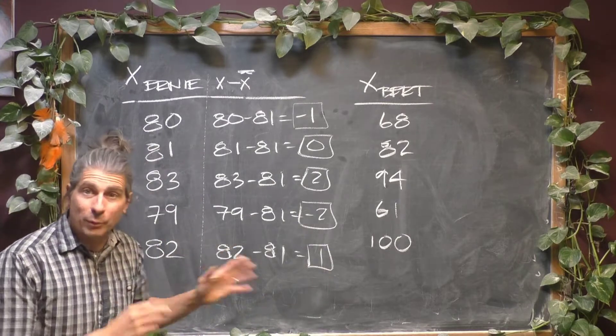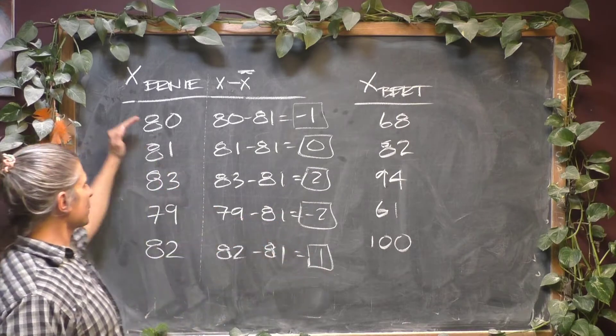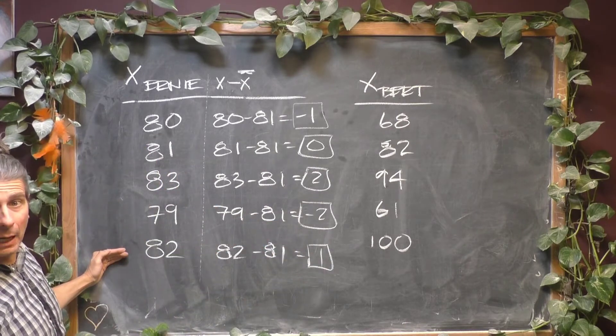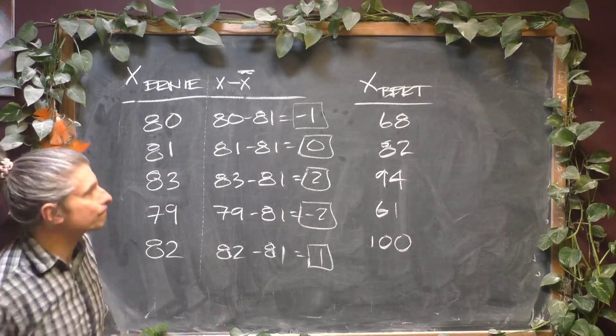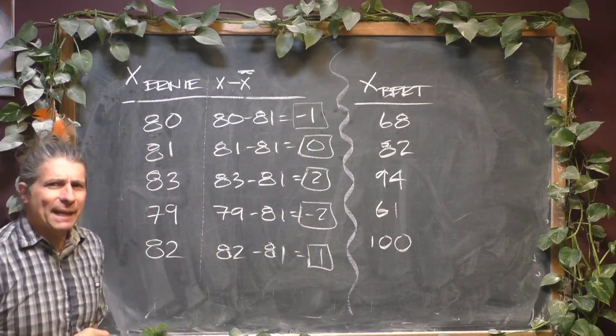So what those numbers are, are the individual deviations from average of Ernie's five test scores. I'm going to put a little squiggly line here between Bert and Ernie. We'll get to Bert in a second.